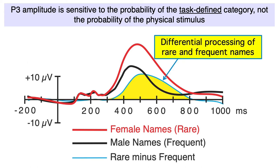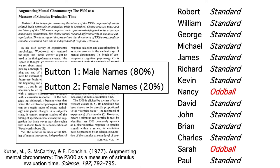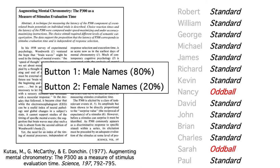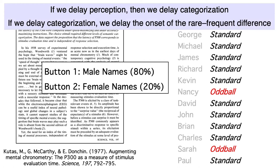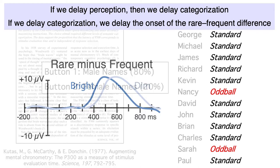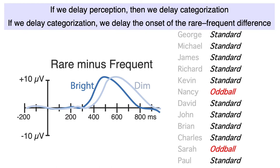If we make a rare minus frequent difference wave, we can restate this by saying that the brain must have begun to categorize the stimuli by the time the difference wave deviates from zero, which is right around 300 milliseconds in these artificial data. Now, let's think about what would happen if we made the names dimmer. This would increase the amount of time it would take to perceive each name. If we slow down perception, this slowing will propagate to all subsequent processes, delaying the categorization of the stimuli as male or female. And if we delay the categorization, we should delay the onset of the rare minus frequent difference — with maybe a 50 millisecond rightward shift of the rare minus frequent difference wave for the dim stimuli.